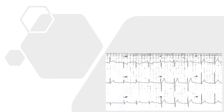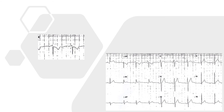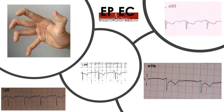And here is another one: diffuse ST elevation, and with a focus on AVR we have the knuckle sign. So when you see an ECG for a patient and you think it might be pericarditis, have a look at AVR and check if you can see what looks like a bent index finger — that will be your knuckle sign.